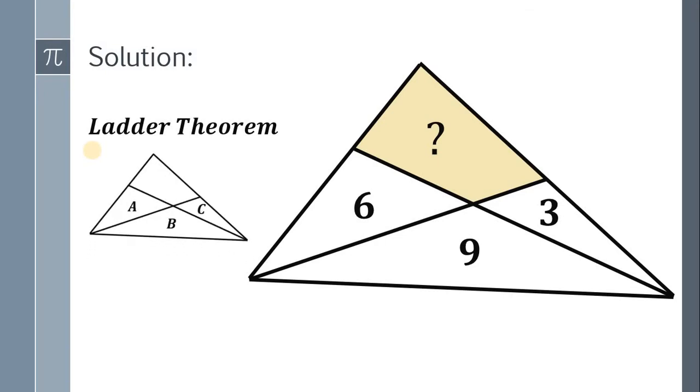If we have a triangle like this, these a, b, and c are the areas of the triangles on the left side, on the bottom part, and on the right side. Ladder Theorem says that 1 over the total area of the triangle plus 1 over b is equal to 1 over a plus b plus 1 over b plus c.